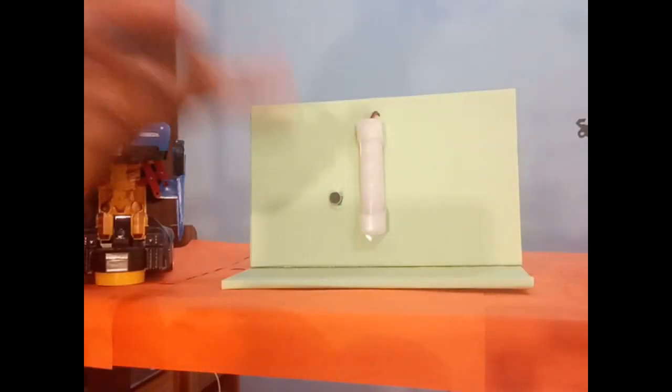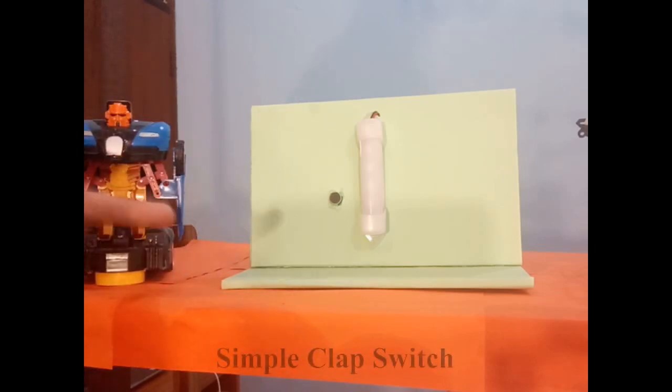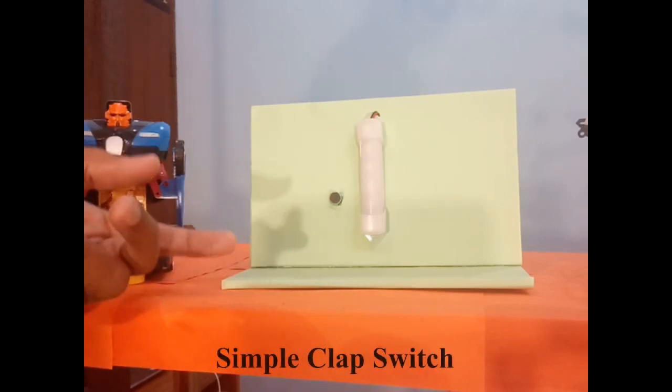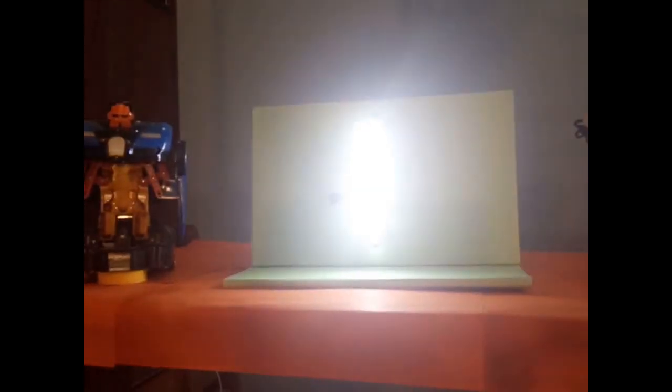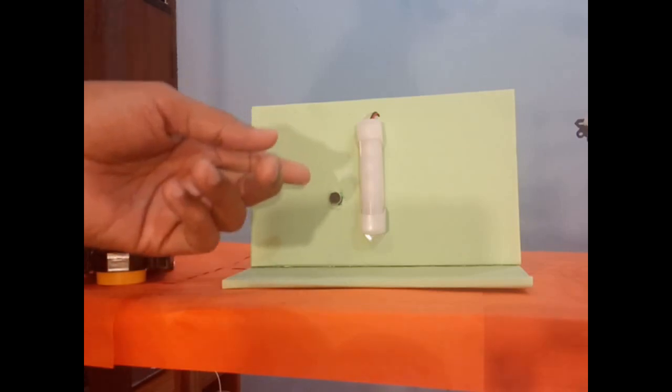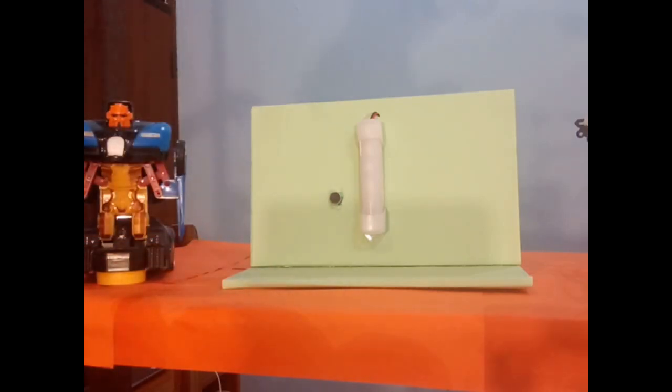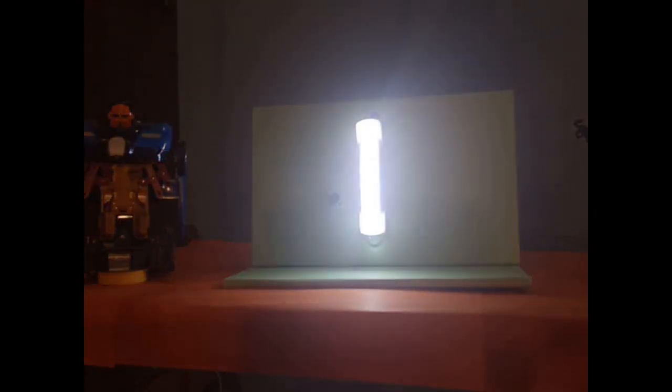Here is another experiment. It is a clap switch. When we clap this light will switch on. Ready. One, two, three. So the light is glowing. Here this mic will receive the sound energy and with the help of a small circuit board, it will be converted into electrical energy. Let's check again. Ready. One, two, three. So clap switch.